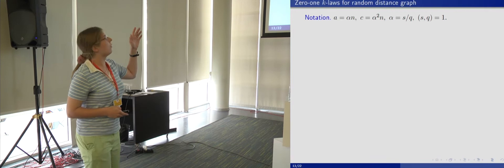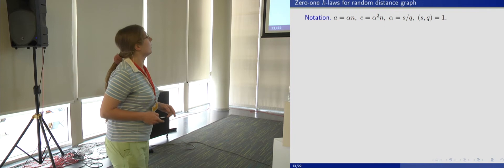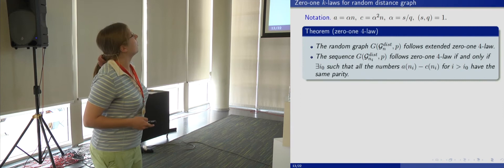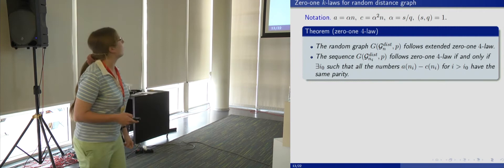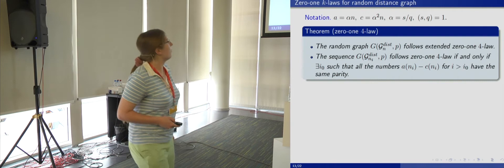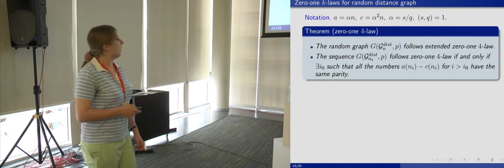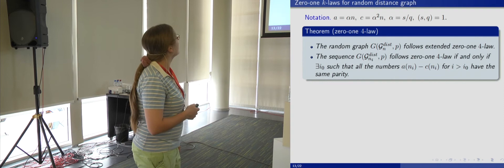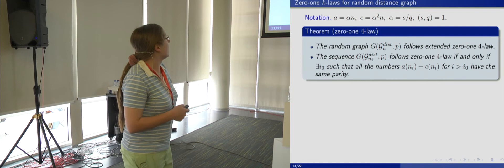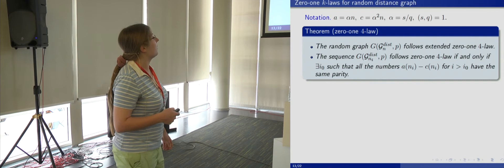What about the 0,1 K law for larger K? We use the following notation: A equals alpha·N, C equals alpha²·N, and alpha equals S over Q as a fraction. We have the following theorem about the 0,1,4 law. First, the random graph G(G_N, P) follows the extended 0,1,4 law. Second, the sequence G(G_{N_I}, P) follows the 0,1,4 law if and only if there exists I_0 such that all the numbers A(N_I) minus C(N_I) for I greater than I_0 have the same parity.